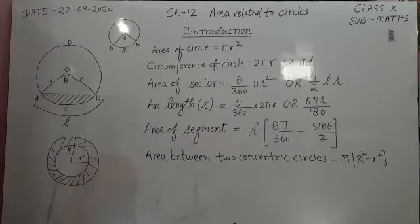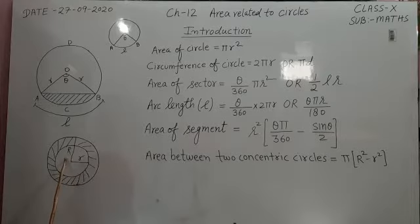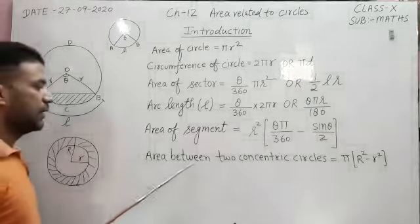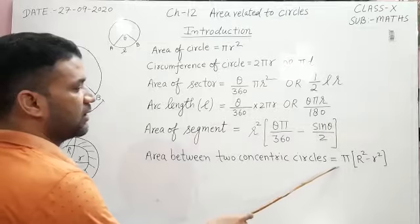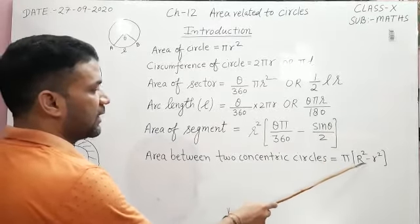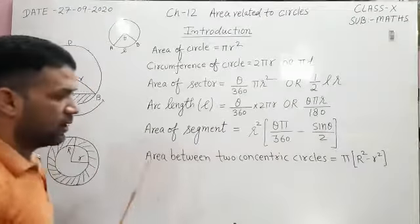This shaded area - if the radius of inner circle is small r and radius of outer circle is capital R, then area between two concentric circles is equal to π(R² - r²).